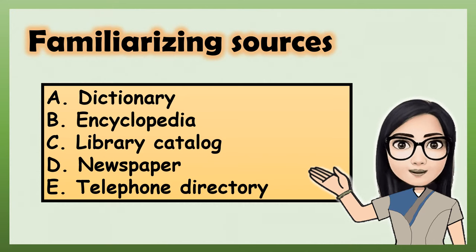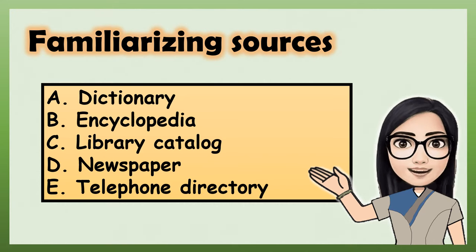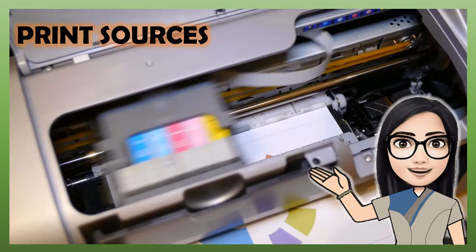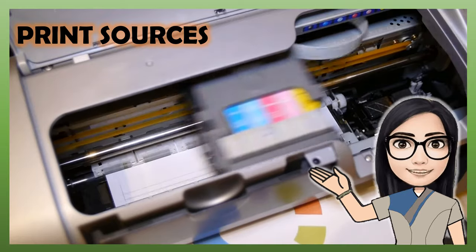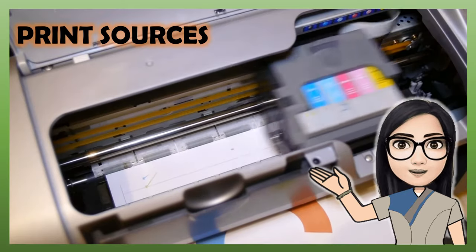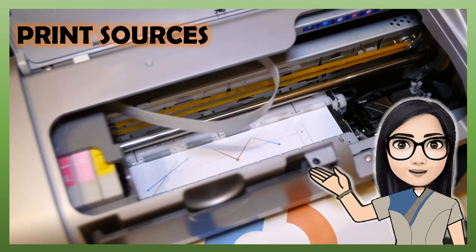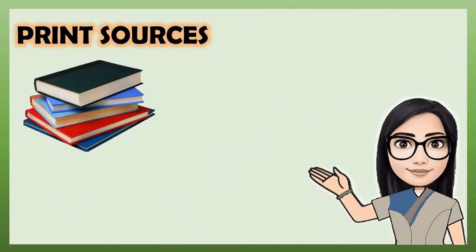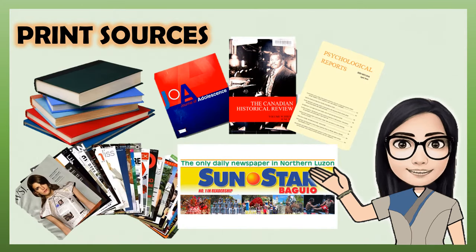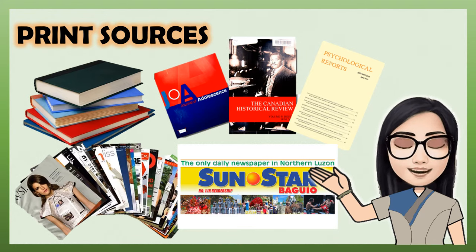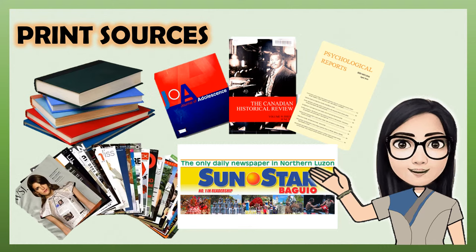How many did you get right? Which of the following is a web source and a print source? Let's find out. A print source is exactly as its name suggests — material that has been printed and can be produced in hard copy. Examples of print sources are books, magazines, scholarly journals, and newspapers. These materials are commonly found in a physical library when doing academic research.